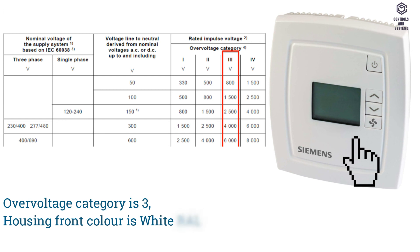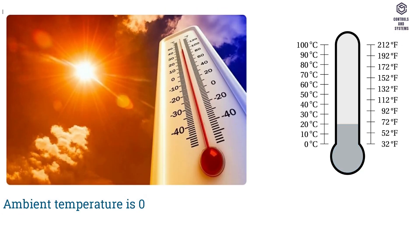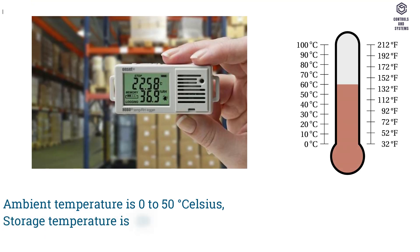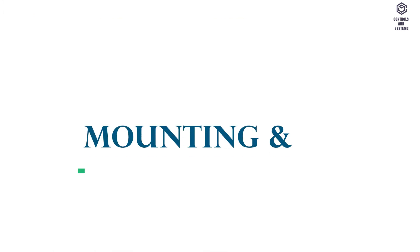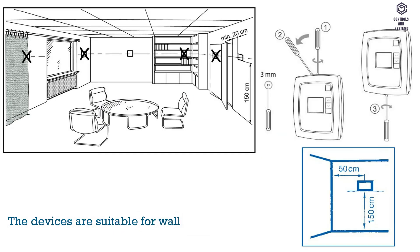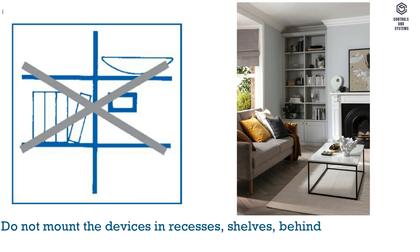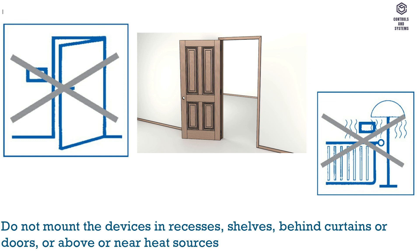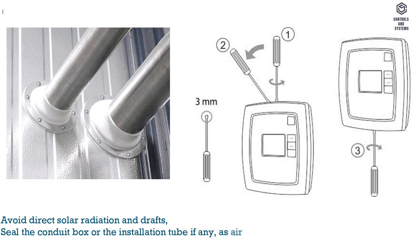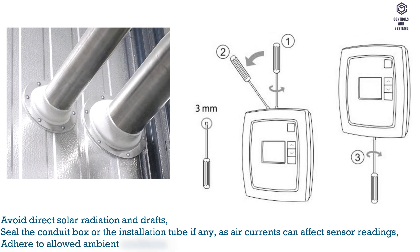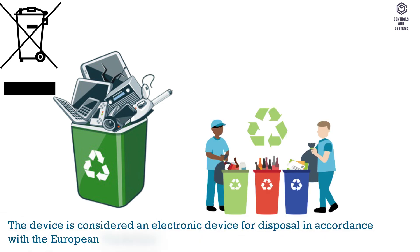Housing front color is white (RAL 9010). Weight without packaging: 0.18 kg. Ambient temperature: 0–58°C. Storage temperature: −20 to +78°C. Ambient humidity: maximum 90% RH. Mounting and installation: devices are suitable for wall mounting; recommended height is 1.5 m above the floor. Do not mount in recesses, shelves, behind curtains or doors, or above or near heat sources. Avoid direct solar radiation and drafts. Seal the conduit box or installation tube, as air currents can affect sensor readings. Adhere to allowable ambient conditions.